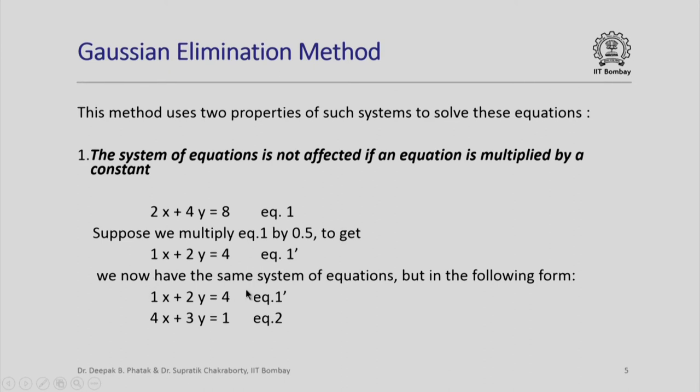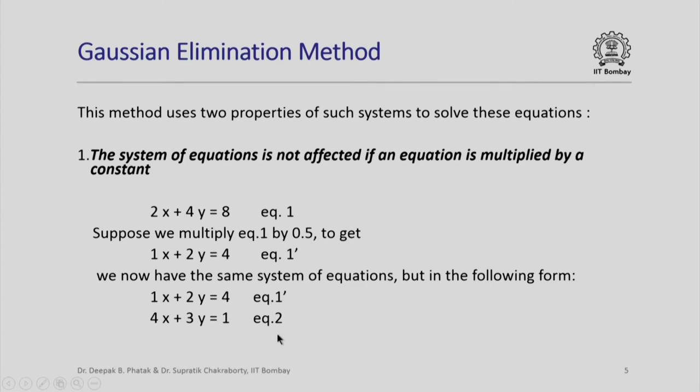With this change, we now have the same system of equations, but in this form: 1x plus 2y equal to 4 as equation 1 prime and 4x plus 3y equal to 1 as equation 2. We again represent these equations in the form of matrices that we saw. So this system naturally translates into a two dimensional matrix having 1, 2, 4, 3 as elements, x and y as a vector, and 4 and 1 representing the right hand side.